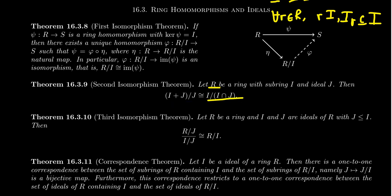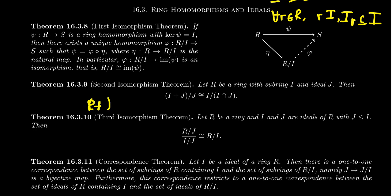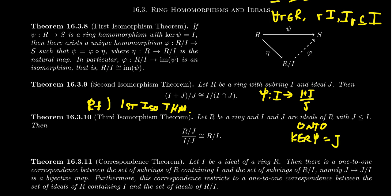Compare this to what the second isomorphism theorem tells us in group theory, where we talk about a subgroup and a normal subgroup. Every ideal is a subring of the ring, but not all subrings are necessarily ideals. We can form I plus J as a subring of R, and that subring will contain the ideal J and J will be an ideal for I plus J as well. The intersection I intersect J forms an ideal for the subring I. The proof is essentially the first isomorphism theorem: you define a homomorphism psi from I to I plus J over J, show it's onto, compute the kernel to equal J, then invoke the first isomorphism theorem.